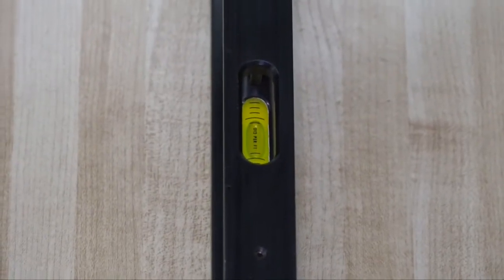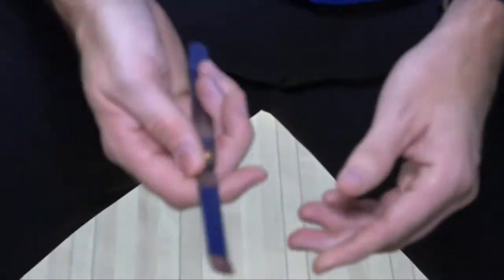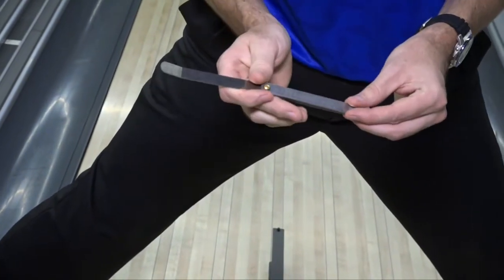Now with the bubble exactly zeroed, we're going to take the amount of the feeler gauges we have in spot, which in this case is one 40 thousandth blade, or .040, and that gets recorded on the sheet.